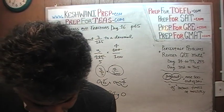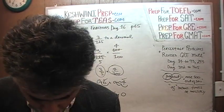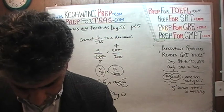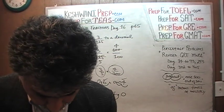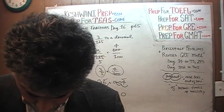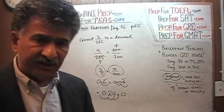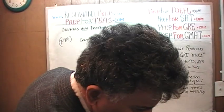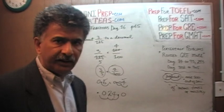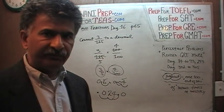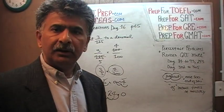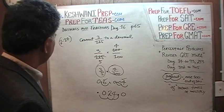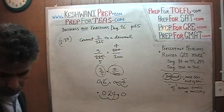Let's go to the next one: convert 1 sixth to a decimal. But there is nothing to convert — we already did that. As I said, on day number 8 and 9 we did the tenths, the fifths, the fourths, the eighths, and the sixths. Let's take a look at it. We are done with this one.